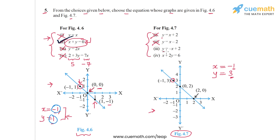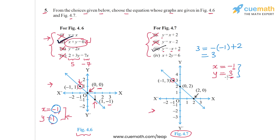The third equation is y equal to minus x plus 2. Let's see if the pair minus 1 comma 3 satisfies this equation. If we substitute y equal to 3 on the LHS, we have 3. And if we substitute x equal to minus 1 on the RHS, we have minus of minus 1 plus 2, which gives 1 plus 2 or 3. So the third equation is satisfied by this pair of values minus 1 comma 3, and this could therefore be the correct choice.